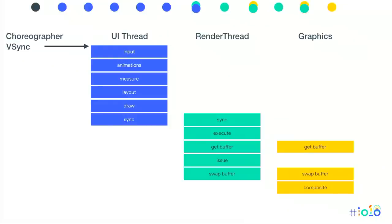Compositing is something we've never explained before, so we're going to go into details about this part of the Android rendering architecture. The colored dots on the top of the screen will note where we are in the process as we work through examples.